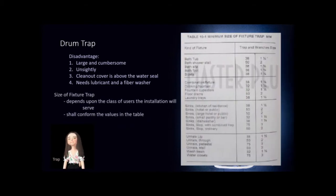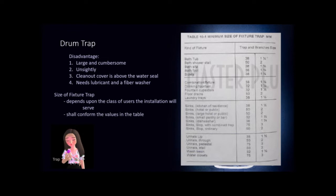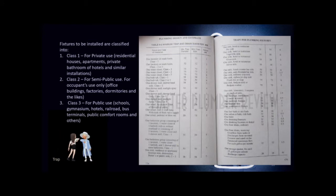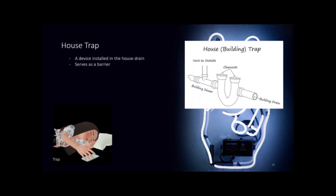The size of the fixture trap depends upon the class of users. It shall conform to the values in the table; the nominal size of trap and waste branch shall not be less than what is given. Fixtures are classified into three classes: Class 1 for private use, Class 2 for semi-public use, and Class 3 for public use, with a table providing minimum trap and drain diameter in millimeters for each class. The house trap is a device installed in the house drain immediately inside the foundation wall of the building, serving as a barrier against gases from the public sewer or septic tank.